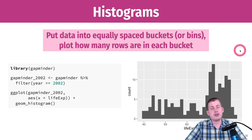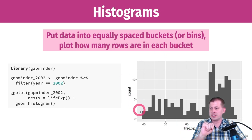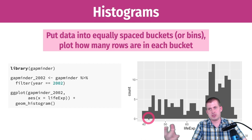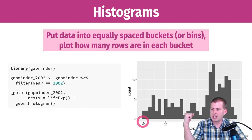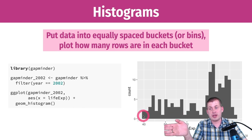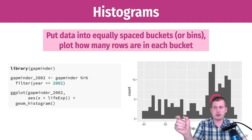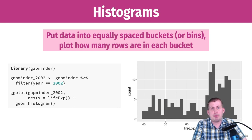Histograms work by taking your data and putting it into bins or buckets, showing how many rows fit within each bucket. If we look at the Gapminder dataset and life expectancy, there's a bucket around 40 — say from 39.5 to 41.5 — and there are two countries with life expectancies in that range. Over here there are almost 15 countries with life expectancies around 72. It's just showing the count of rows within each bin.